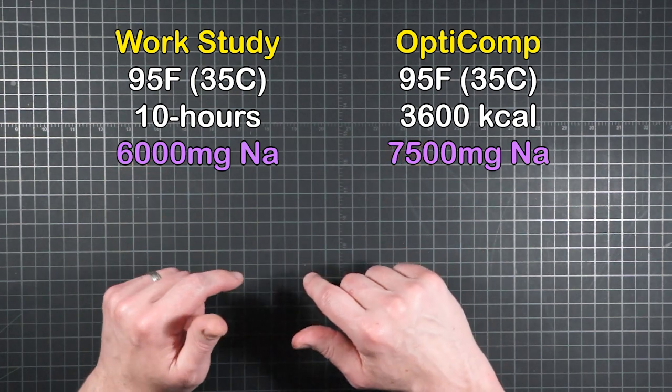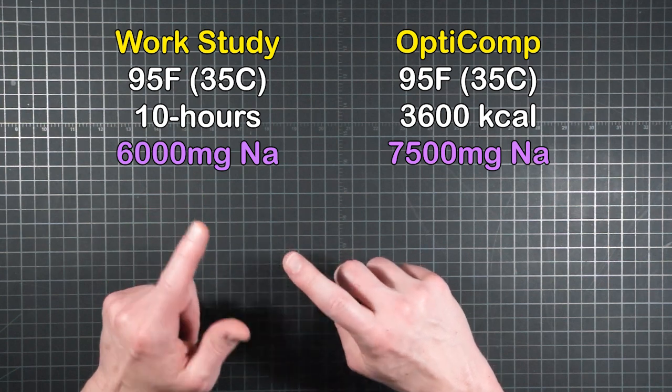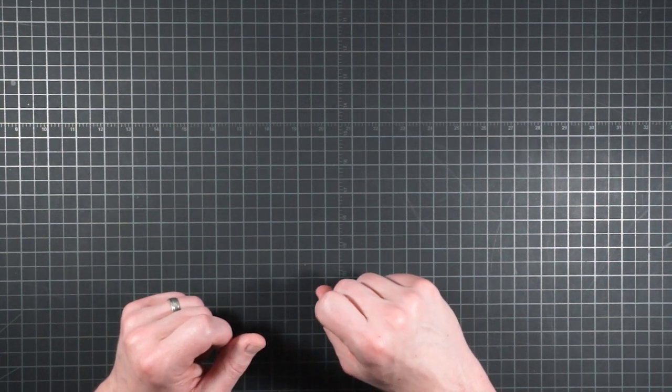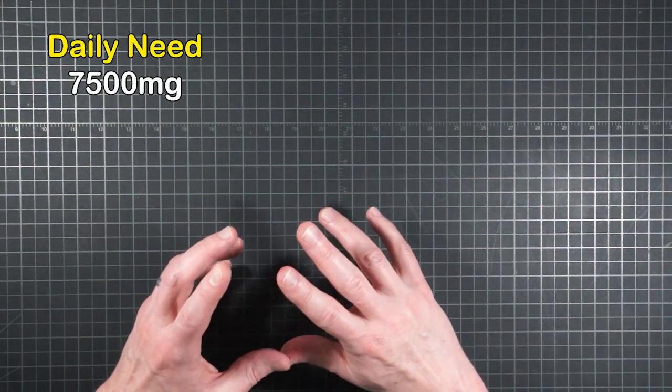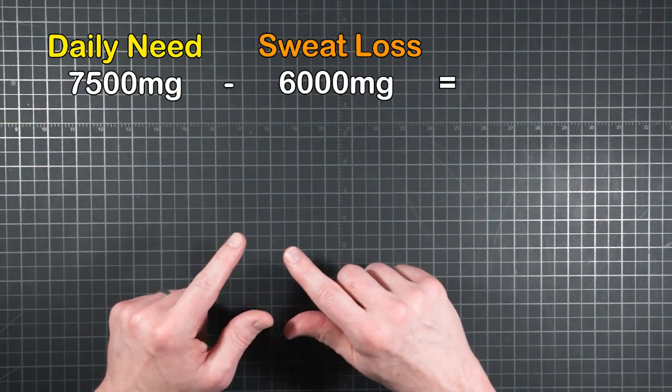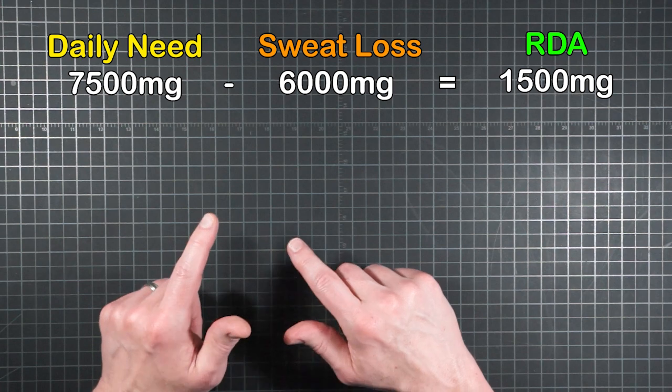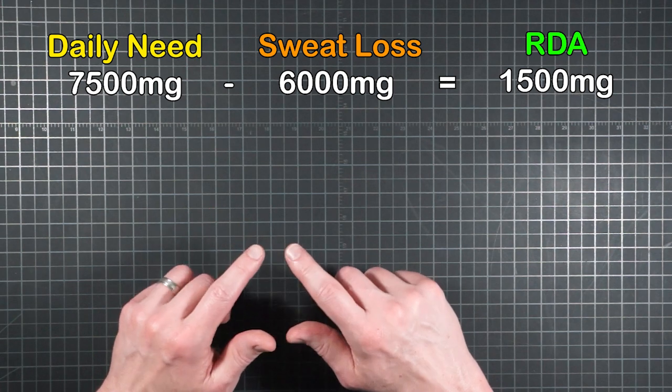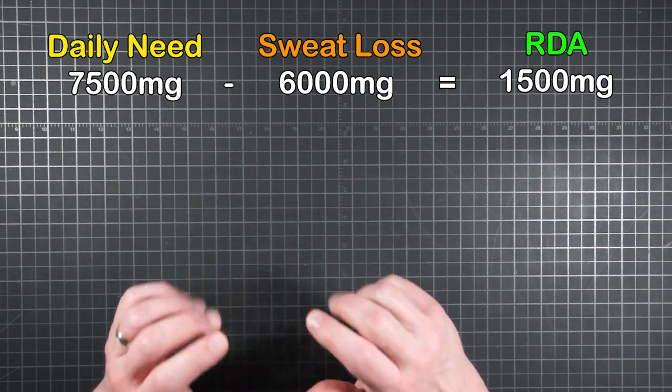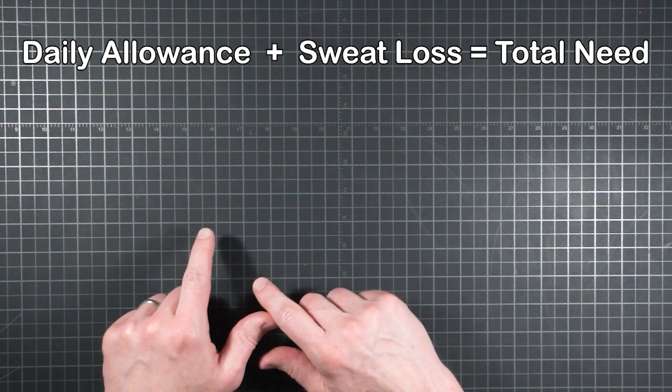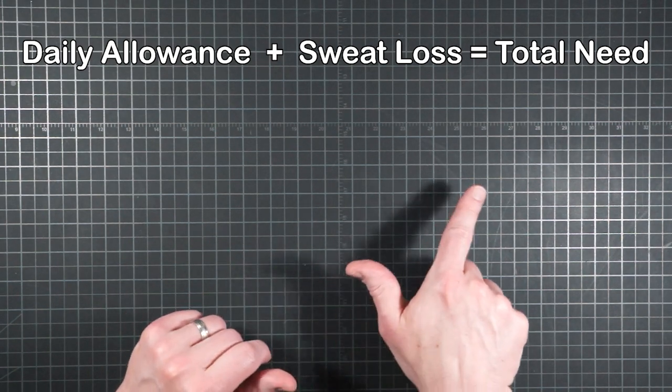I pulled their upper limit value of 6,000 milligrams for sodium, which was for exertion at 95 degrees. Then I compared it to the required daily need from the OptiComp graph. Assuming the 10-hour work day at 40% effort is at least somewhat analogous to a 3,600-calorie day of hiking, the graph gives a value of 7,500 milligrams at the matching temperature.